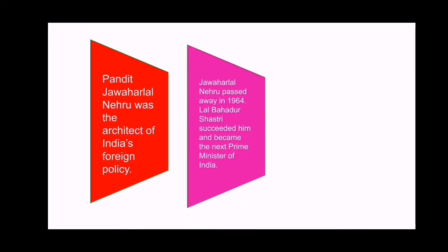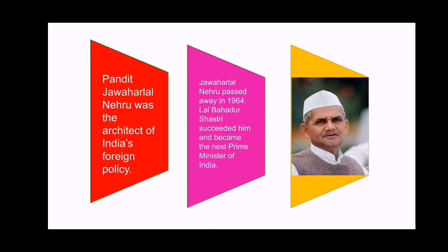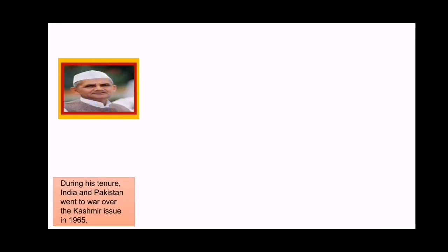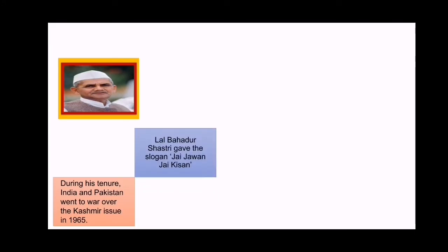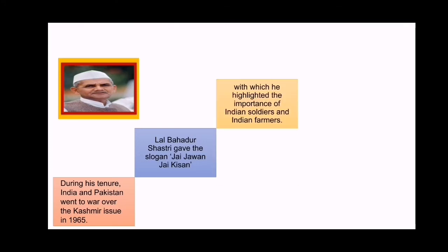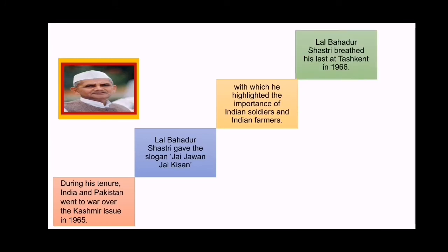Nehru passed away in 1964, and after him, Lal Bahadur Shastri became the Prime Minister of our country. During his tenure, many issues arose. India and Pakistan went to war over the Kashmir issue in 1965. Lal Bahadur Shastri gave the slogan 'Jai Jawan, Jai Kisan,' with which he highlighted the importance of Indian soldiers and Indian farmers.